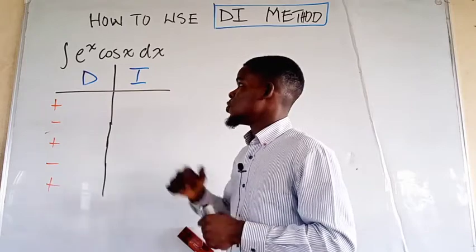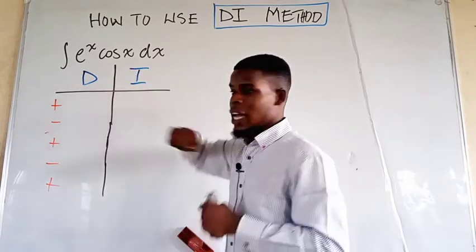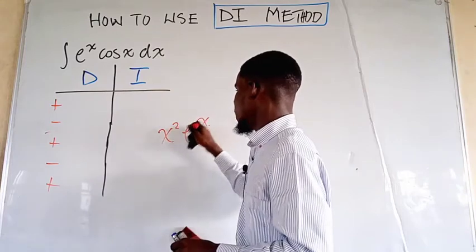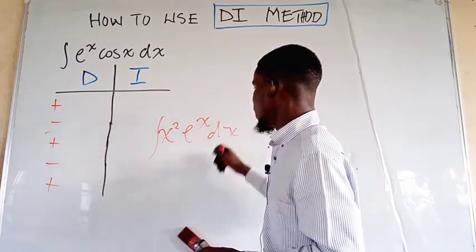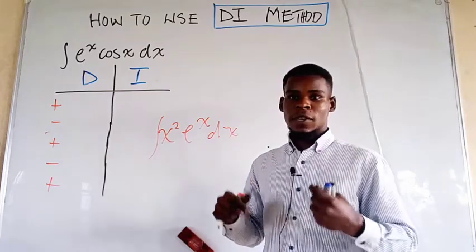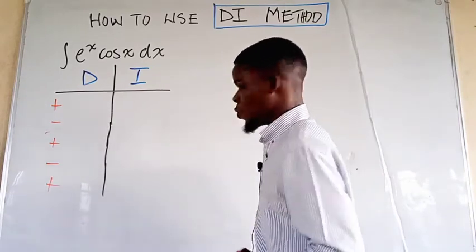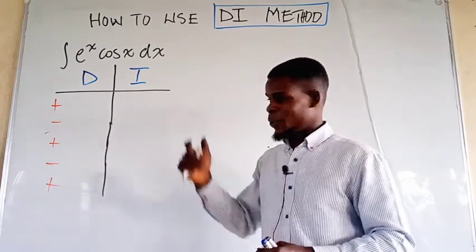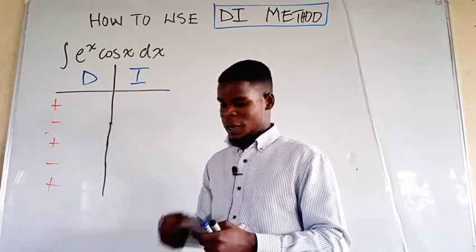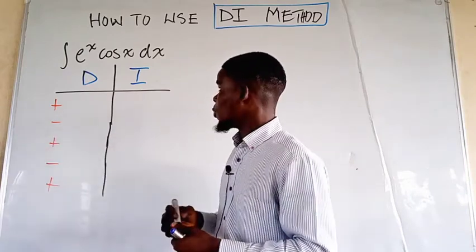The main issue with this kind of integral is that applying integration by parts, we will not have an end, unlike when we have something like x squared times e to the power of x. With that, you differentiate until you get a constant. But in this case, we will not arrive at any constant. We are going to apply the method and where we have to stop, we will know why we stopped, and that will help us.